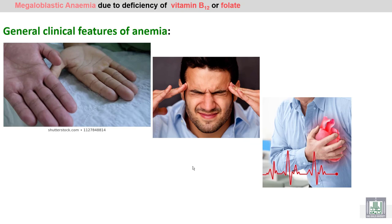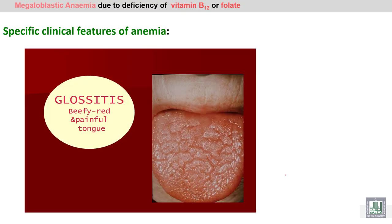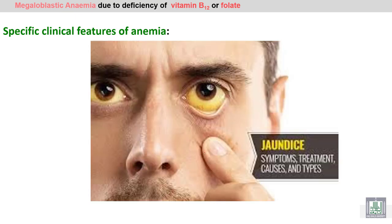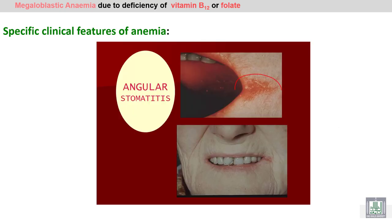Clinical diagnosis of megaloblastic anemia includes general features of anemia like pallor, headache, and palpitation. In addition to specific clinical features, you can see the tongue is beefy red. Jaundice is also specific — as you know, it is seen in hemolytic anemia, but we can also see jaundice in megaloblastic anemia because of ineffective erythropoiesis. Angular stomatitis is seen as a nutritional anemia feature — here are two pictures of angular stomatitis.